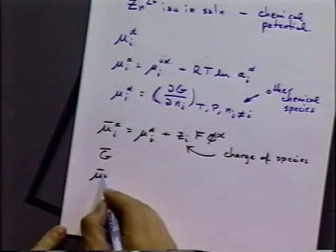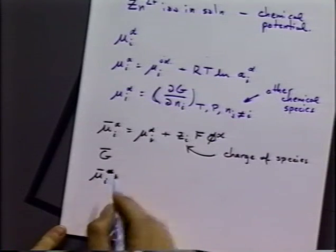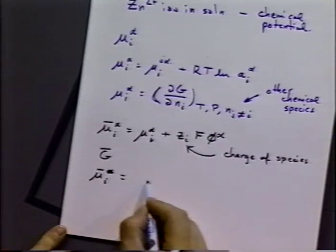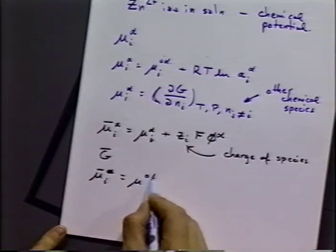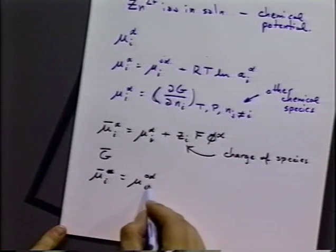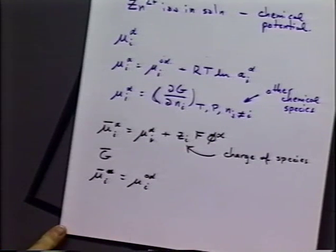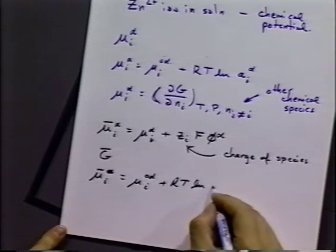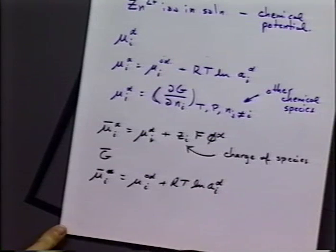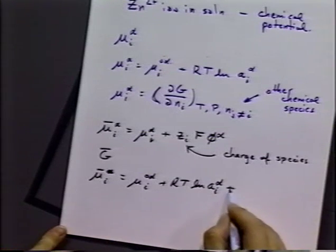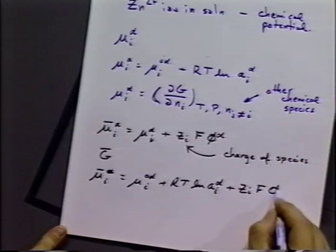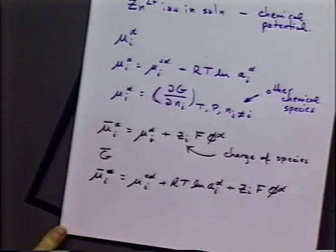We can expand our definition a little bit. The electrochemical potential of species I in phase alpha is equal to the standard chemical potential of species I in phase alpha, plus RT ln of the activity of species I in phase alpha, plus our electrostatic term Z sub I times F times phi superscript alpha.